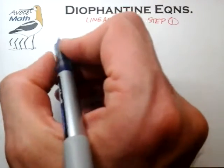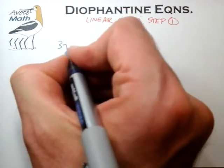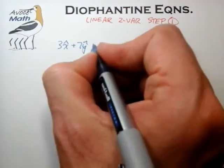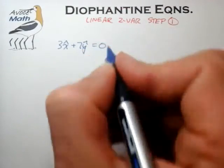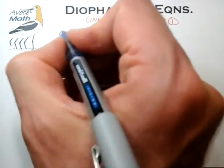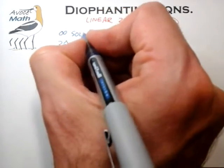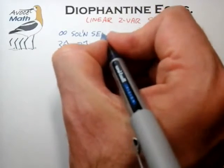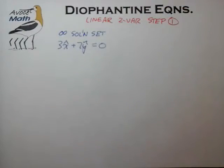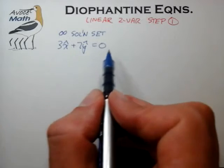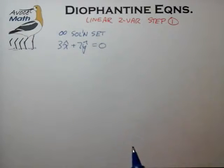We've essentially formed the equation 3x-hat plus 7y-hat now equal to zero, and our goal here is to characterize the infinite solution set for this simplified equation. It's pretty obvious why we've done this, because essentially this is a much simpler equation to deal with than the original equation.